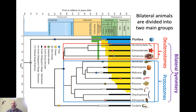Within the group of bilateral animals, there are two main subgroups: the deuterostomes and the protostomes. Vertebrates and echinoderms belong to the deuterostomes, and basically all other animals — the different kinds of worms and arthropods — are protostomes. These two categories are associated with an ancient evolutionary split going back even before the Ediacaran, as this phylogenetic tree predicts.